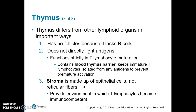The thymus is different from other lymphoid organs for several reasons. First, it has no follicles because it lacks B-cells. Second, it does not directly fight antigens — it functions only as a site for T-cell maturation. The thymus has a blood-thymus barrier to keep immature T-cells isolated from antigens and prevent their premature activation. Lastly, the thymus has a stroma made up of epithelial cells, not reticular fibers.